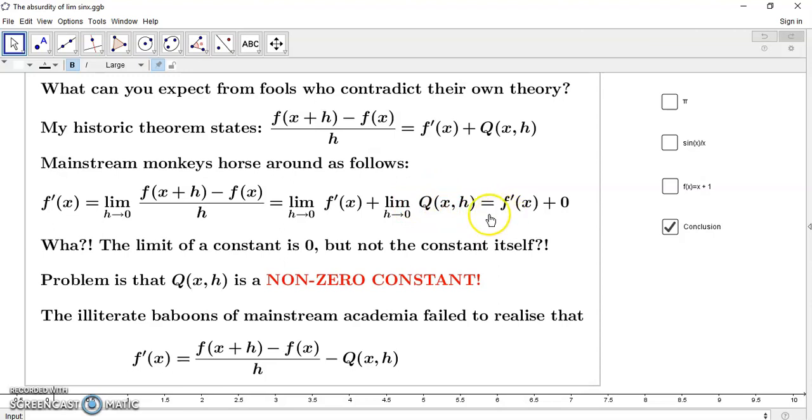It's not even a tautology, it's as simple as 1 plus 1 equals 2. Now, mainstream monkeys horse around as follows. They decide that they're going to define the derivative as the limit of this secant line slope. In other words, they're taking the limit of a constant, people. They're taking the limit of a constant.